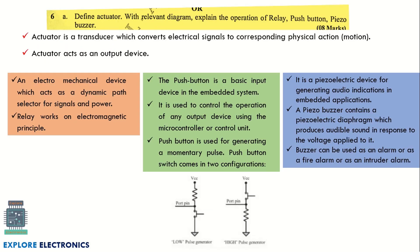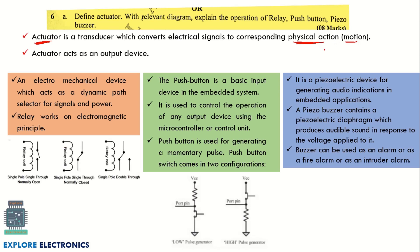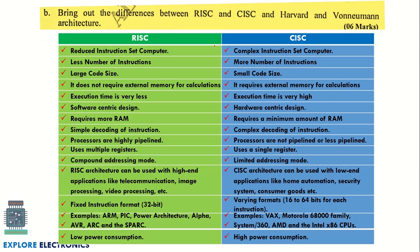The next question asks you to define an actuator and explain the operation of a relay, push button, and piezo buzzer with relevant diagrams. An actuator is a transducer used at the output of an embedded system that converts an electrical signal into a corresponding physical action such as motion, rotation, LED activation, or display output. Explain what a relay is, its different types, how a push button works, and how a piezo buzzer operates.